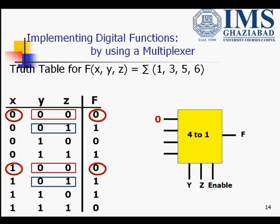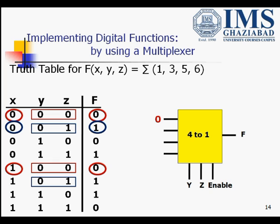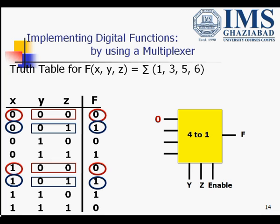When y,z = 0,1: when x=0 the function value is 0, and when x=1 the function value is 1. That is, irrespective of the value of x, the function value is 1. Thus the second input for this multiplexer comes out to be 1.